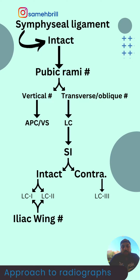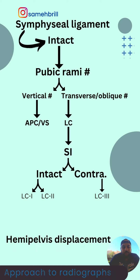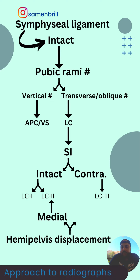To confirm LC2 or LC3, we take a look at the hemipelvis. If there is a medial displacement of the hemipelvis, that's an LC2. If there is an ipsilateral medial and a contralateral lateral displacement, that's an LC3.